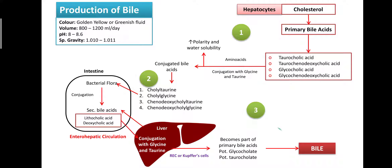These bile salts are a component of bile. The bile is then stored in the gallbladder. Bile is golden yellow or greenish in color, with a pH of 8 to 8.6 and a volume of 800 to 1200 ml per day. The specific gravity is 1.010 to 1.011. Thank you, dear students.